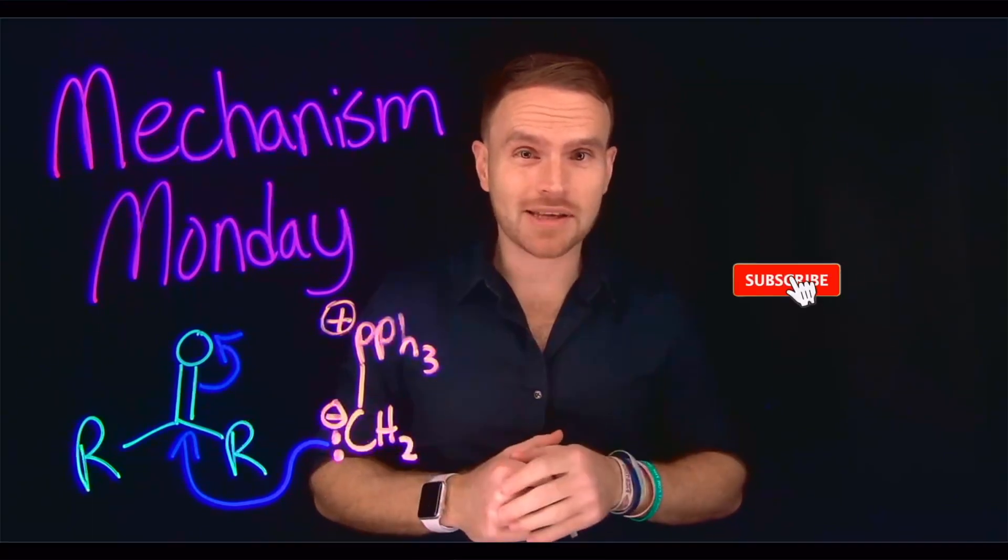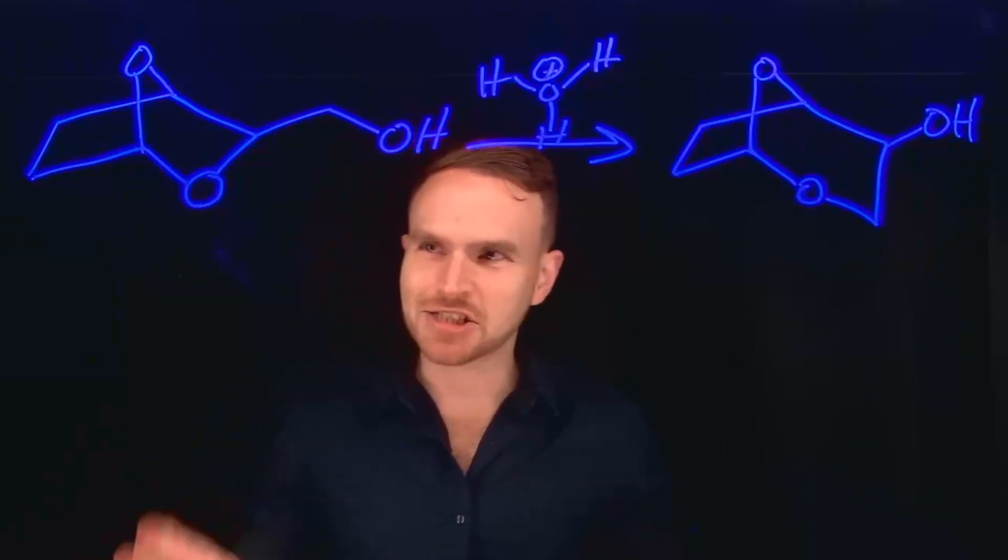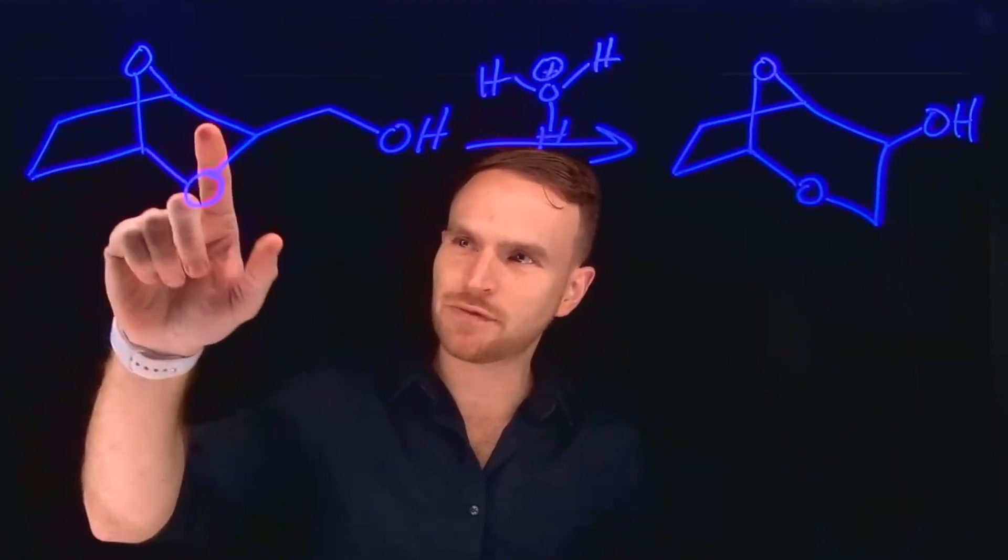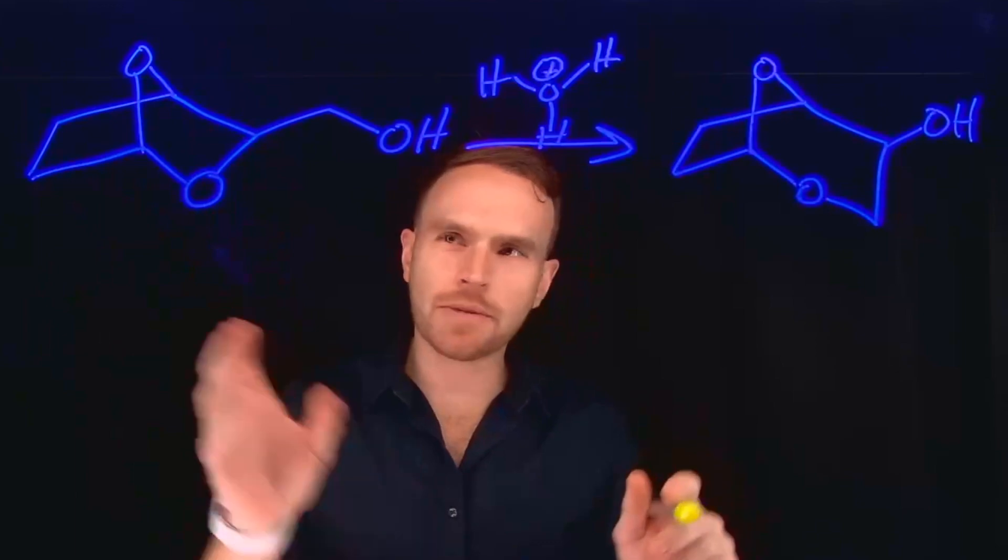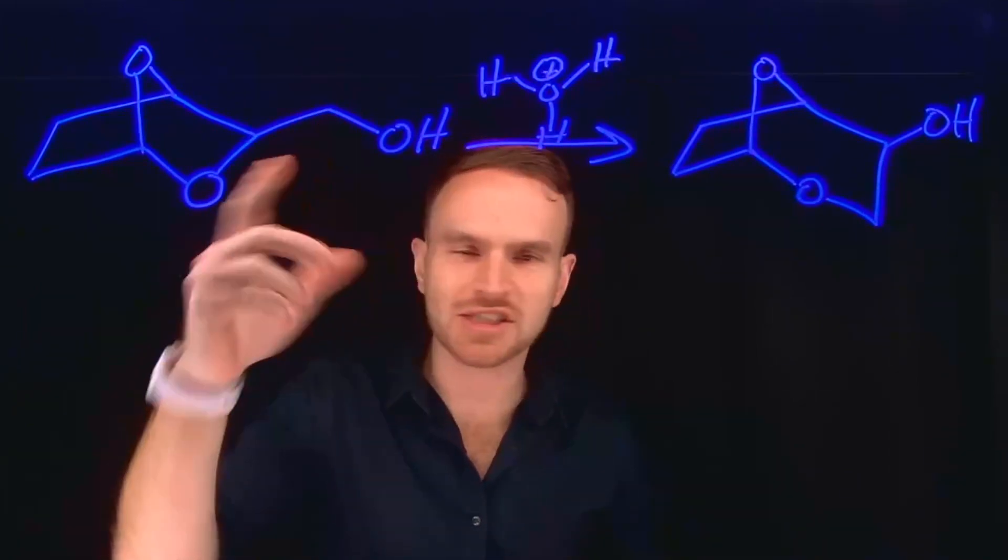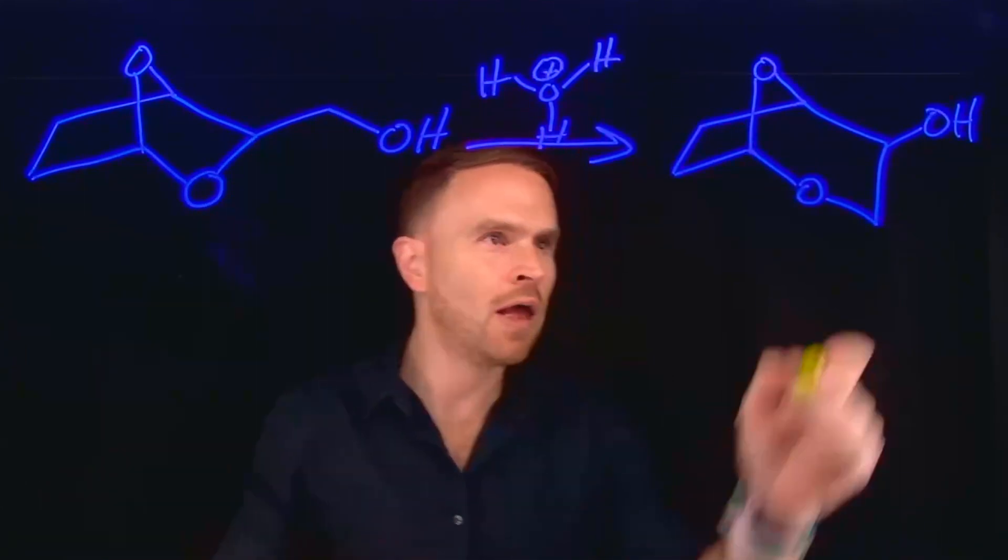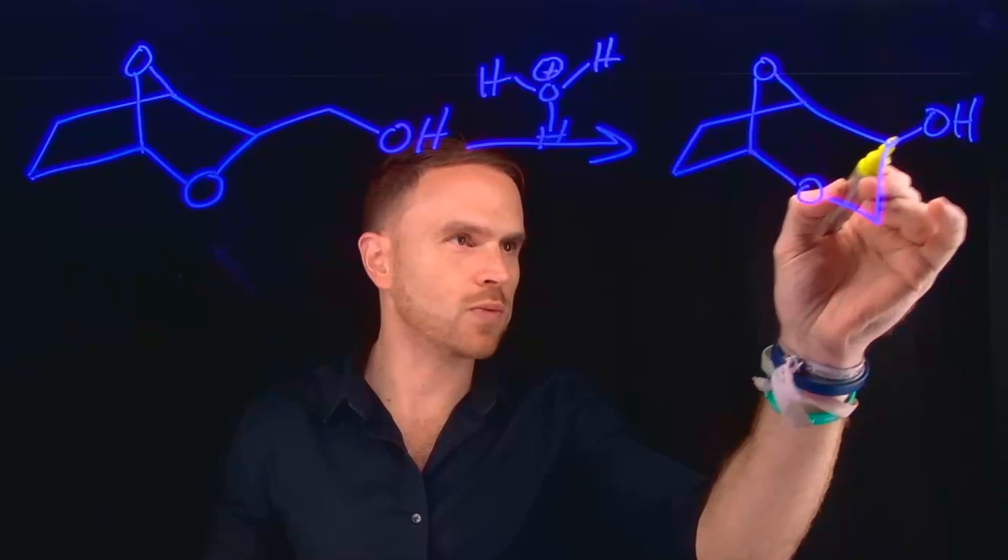And make sure you stick around to the end because I'll give you another mechanism to solve for next week's video. In this very unique reaction, we have a fused cyclic ring, and what appears to be happening is a migration of a methyl group, or a CH2. So notice here we have a CH2 alcohol, but on this side, coming off the ring, we only have the alcohol.